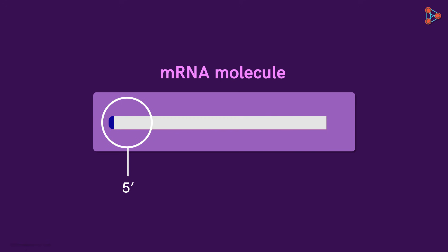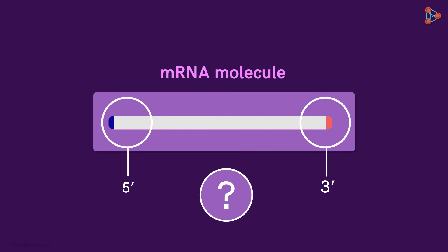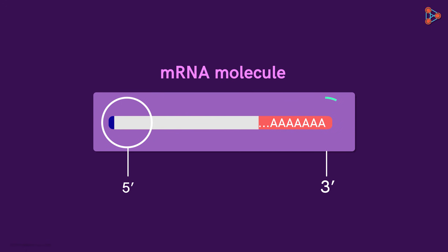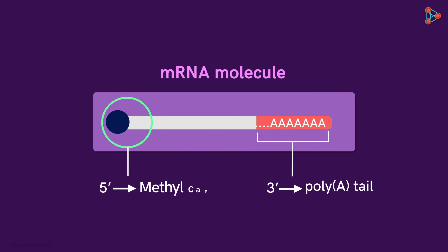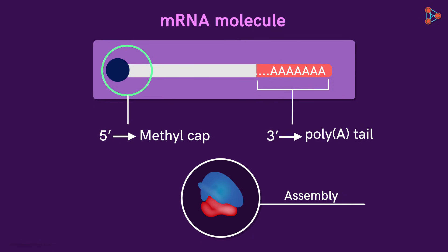This is the 5' end of the mRNA and this is the 3' end. We can recognize these ends with the help of specific markers. The 3' end has a continuous series of A nucleotides — this region is called the poly-A tail. The 5' end, on the other hand, has a cap of methyl group, so this end is said to be methylated. But why is the directionality needed? It's extremely important. The assembly that carries out translation binds to the mRNA near the 5' end, and the easiest way to recognize the 5' end is by the presence of this methyl cap. This is how the assembly knows to bind near the 5' end and not to the poly-A tail.